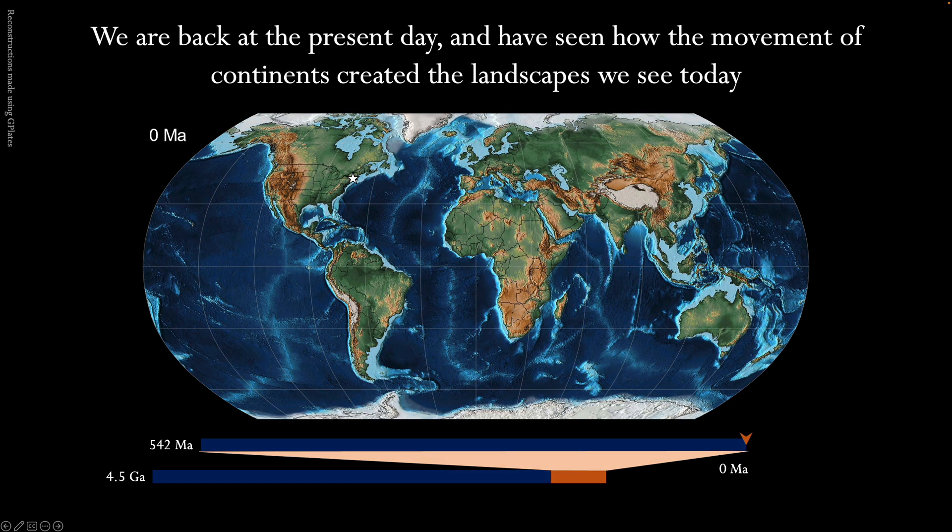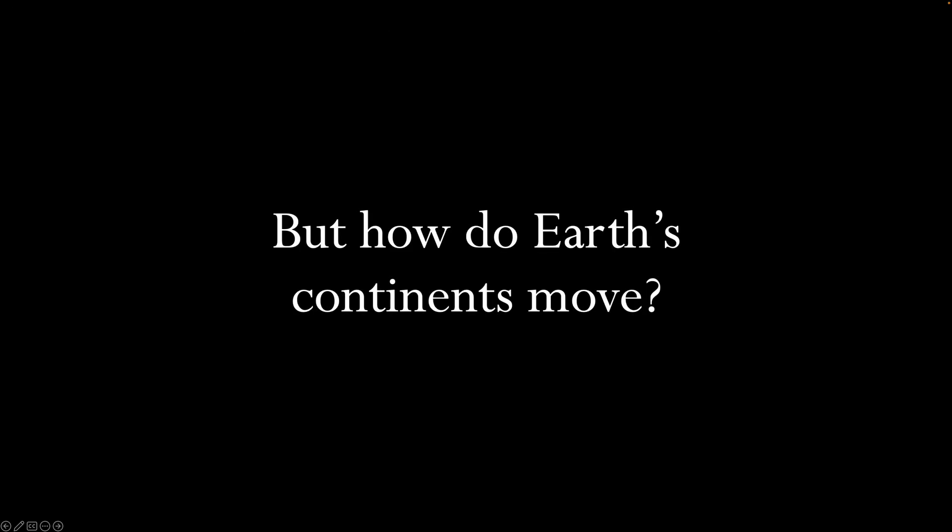We are back at the present day and have seen how Earth's continents have moved over the past 500 million years, ultimately creating the landscapes we see today. But how do Earth's continents move? And how has the movement of continents shaped the landscape of the Connecticut River Valley?